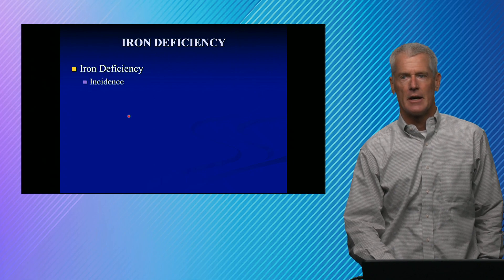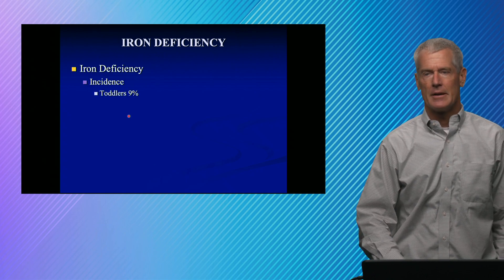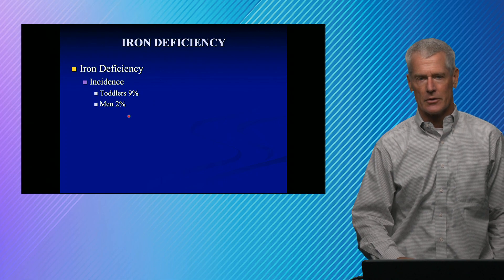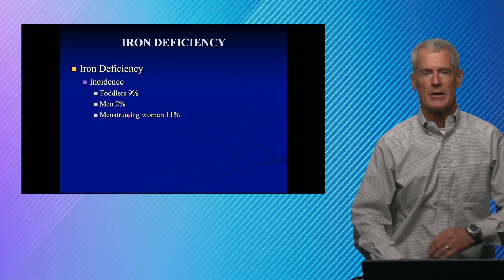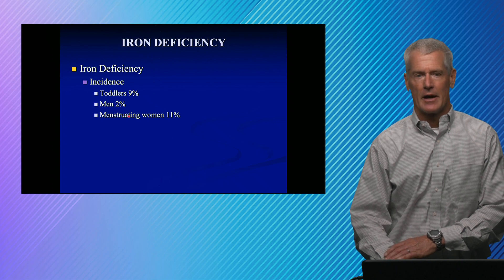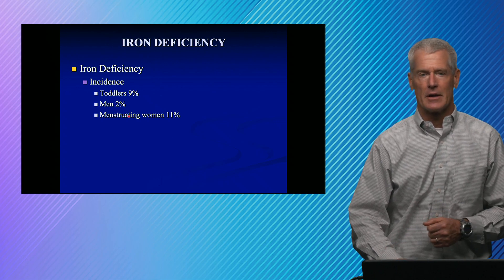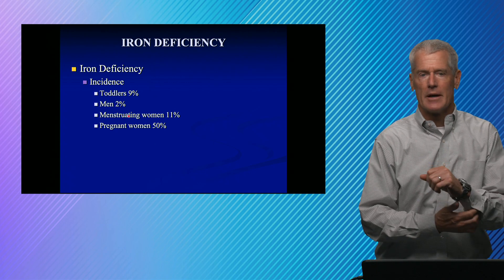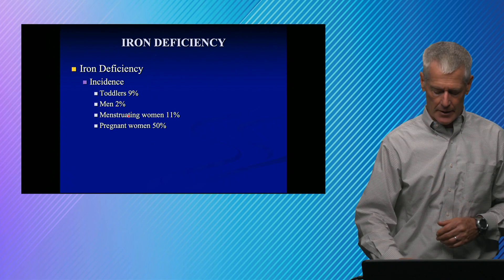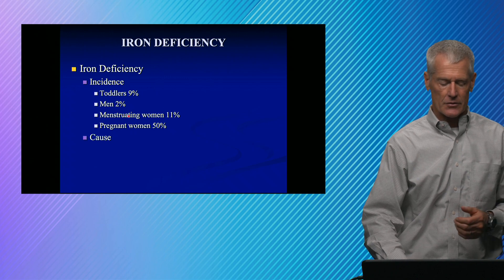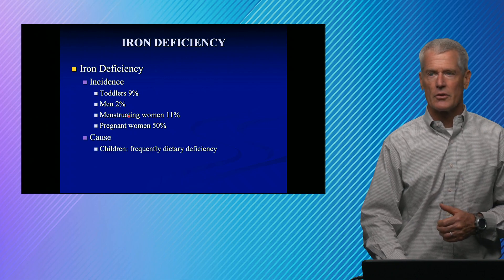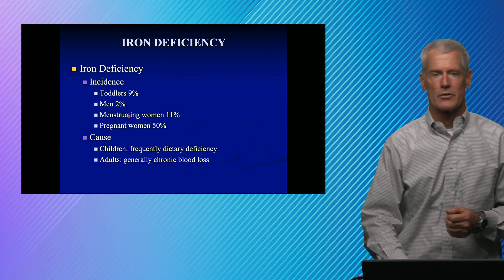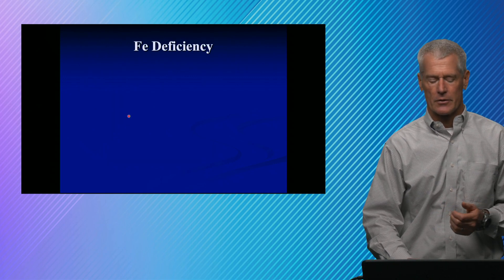In iron deficiency, it's fairly common in toddlers who are just not getting enough iron in their diet. Men account for about 2 percent, typically due to blood loss. Women — especially menstruating women — maybe 11 percent have iron deficiency. It's a very common diagnosis, fairly easily made by looking at lab parameters. In adults, the cause is generally chronic blood loss, which is why women have lower iron levels than men.